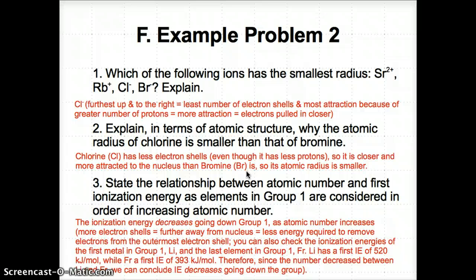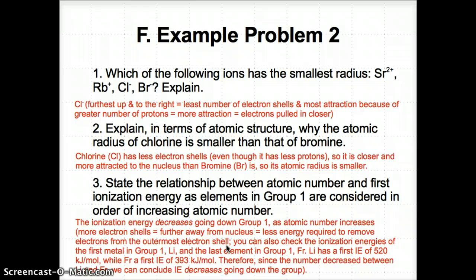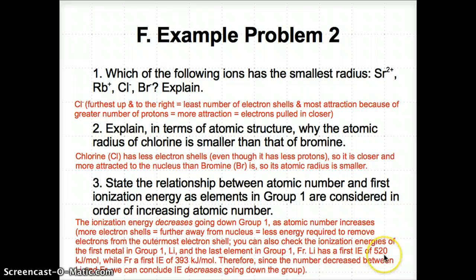Number three: explain the relationship between atomic number and first ionization energy for elements in group one in order of increasing atomic number. Ionization energy actually decreases going down group one as atomic number increases, because the more electron shells you have, the further away the electrons are from the nucleus, making it much easier to pull them off. So less energy is required to remove electrons. You can check this with Table S: Li has a first ionization energy of 520 kJ/mol, while Fr has 393 kJ/mol. Since the value decreased between Li and Fr, ionization energy decreases going down the group.